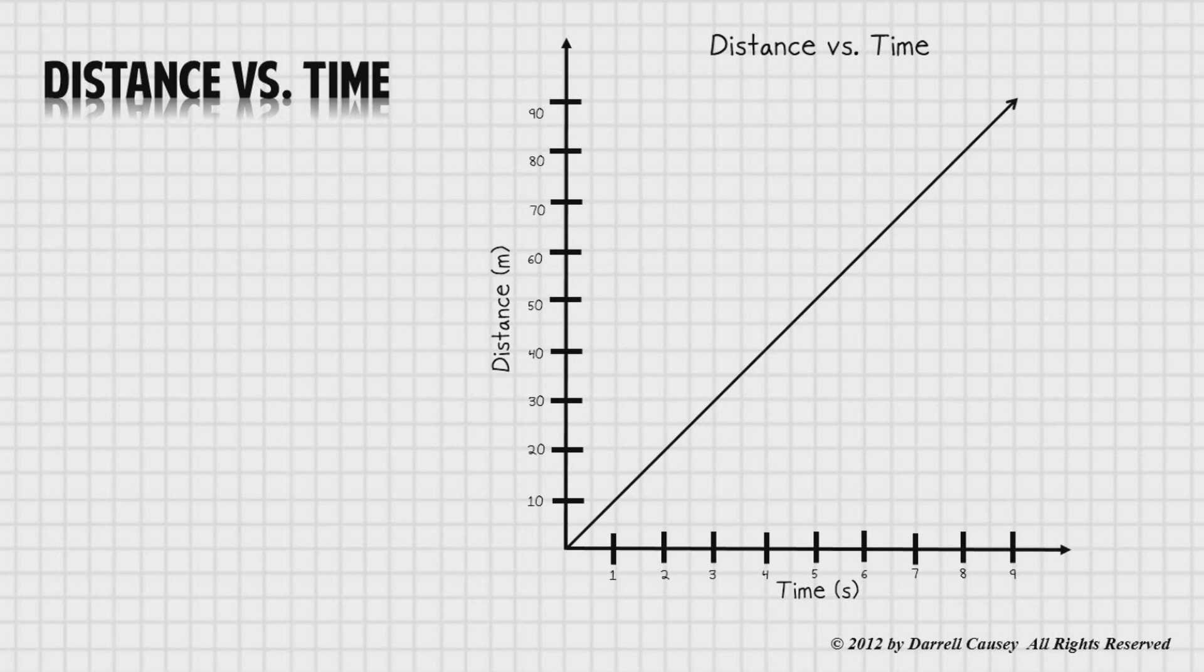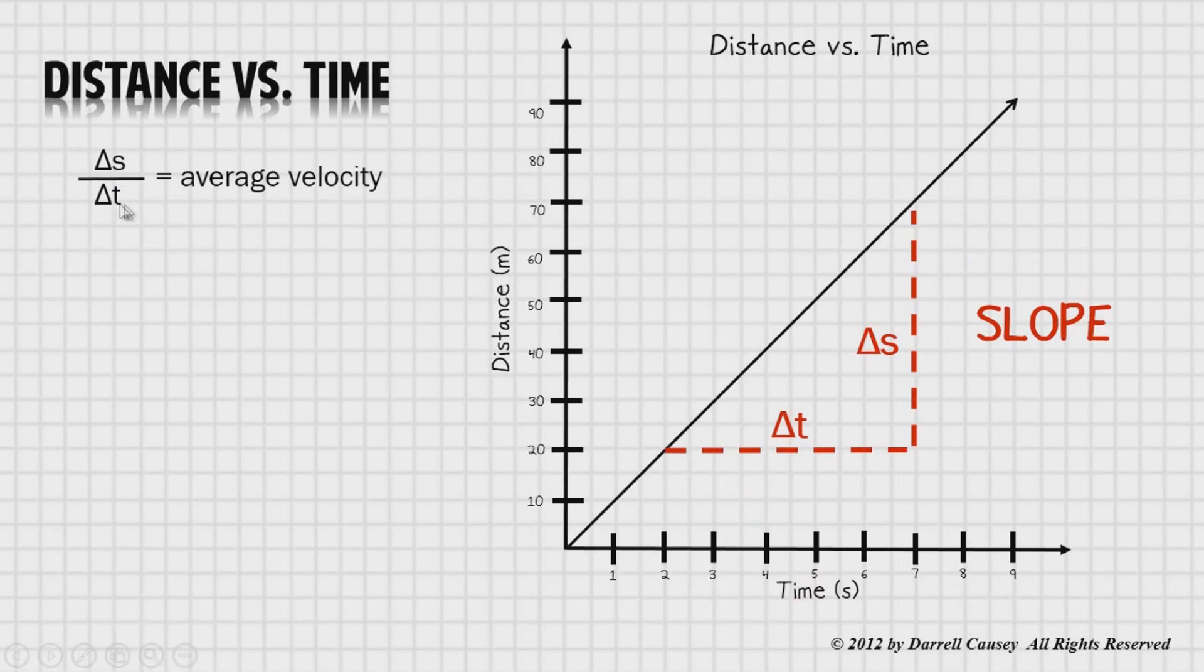Let's interpret this graph now. There's the change in displacement and there's the change in time. If you recognize this, we are working with the change in displacement over the change in time. And that's just slope. And so if you look over here to the left, you'll notice that displacement over time is average velocity. And that's something we already know. It's just the slope of a distance versus time graph.